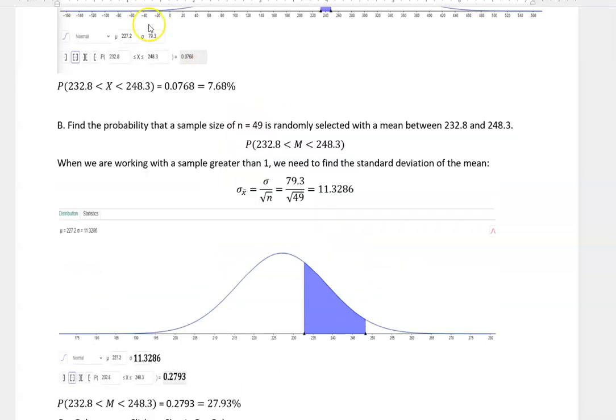So we take our standard deviation which was 79.3 and we divide it by the square root of the sample size that we're dealing with which is 49, and that gives us a new standard deviation for the mean of 11.3286.